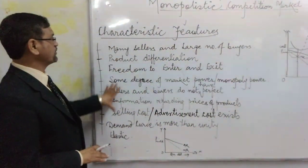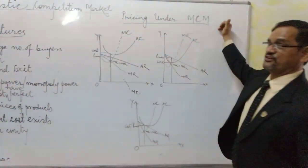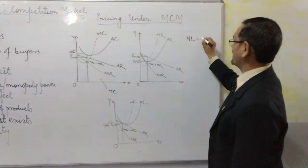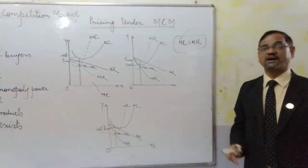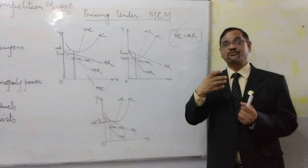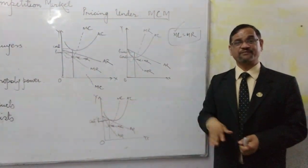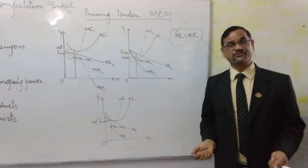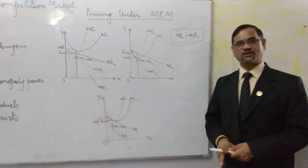Now, how do we fix pricing in the monopolistic competition market? We fix the price at the point where MC is equal to MR — marginal cost equals marginal revenue. If the additional revenue I am getting is not equal to my marginal cost, I will not produce if my cost is more and revenue is less. This is the point where we fix the equilibrium price in the monopolistic competition market.